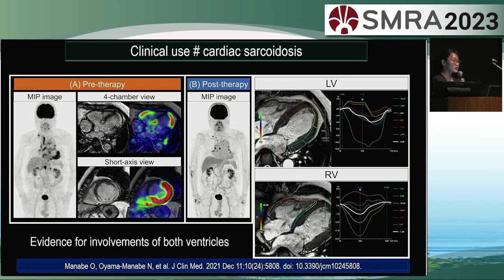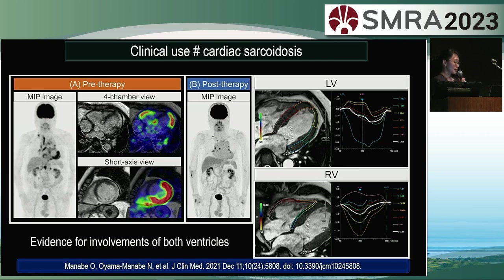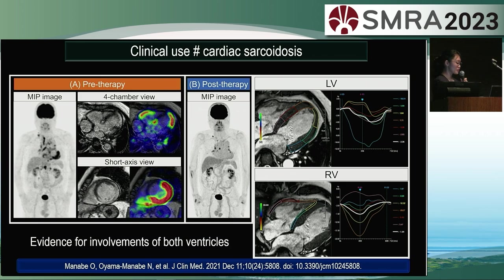This is a representative case of cardiac sarcoidosis from a paper published in 2021. As you can see in the pre-treatment PET images, there is an accumulation in the right ventricular wall. Typically, assessment of the right ventricle in LGE MRI is challenging, but it can be recognized using merged images. Both the left and right ventricles exhibit heterogeneous strain curves, providing evidence of pathological changes in both ventricles.